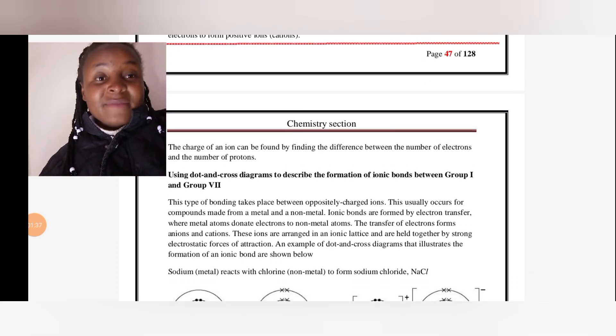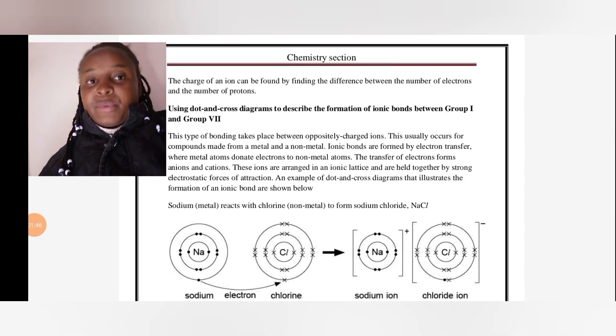Ionic bonding takes place between positively charged ions and negatively charged ions. An ionic compound is formed from a positively charged ion and a negatively charged ion. Ionic compounds are formed when there is a transfer of electrons—electrons are transferred or donated by the metal to the non-metal.